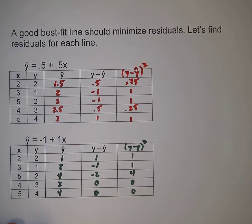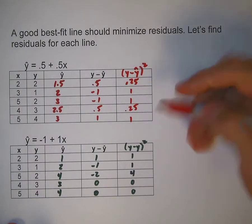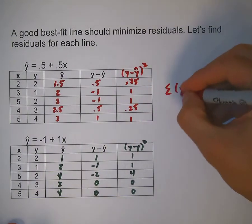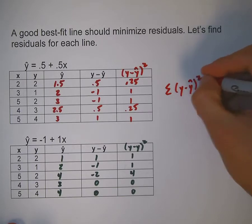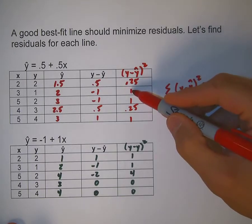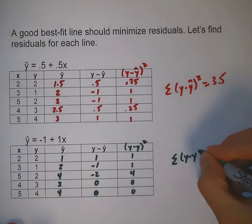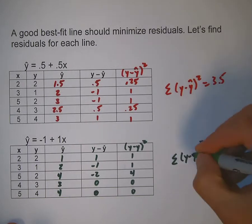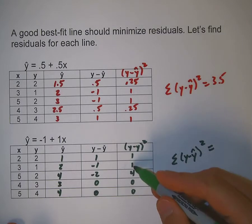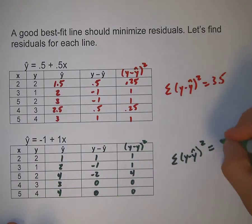Now we can take the sum of the squared residuals. 0.25, 1, 1, 0.25, 1—that's 3.5 for the first line. And for the second line, y minus y-hat squared: 1, 1, 4, 0, 0. So that's 6.